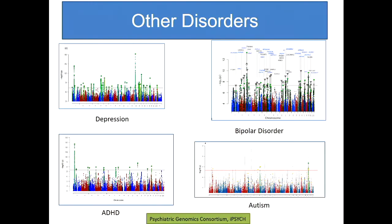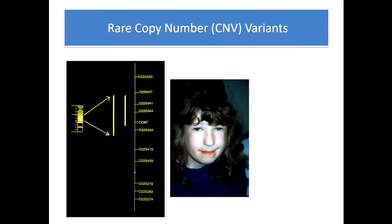The other disorders - depression, bipolar disorder, attention deficit disorder, autism - they're going through similar processes and finding similar things, but they're less advanced than schizophrenia, which is why my focus is on schizophrenia. But the other disorders are going through similar processes.